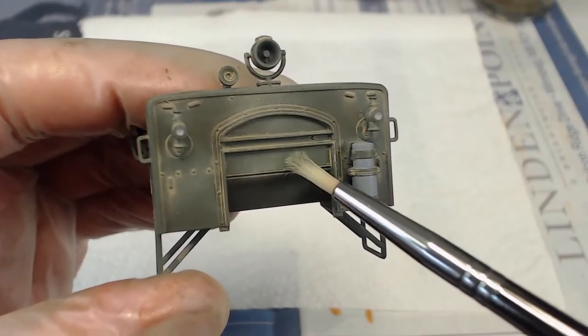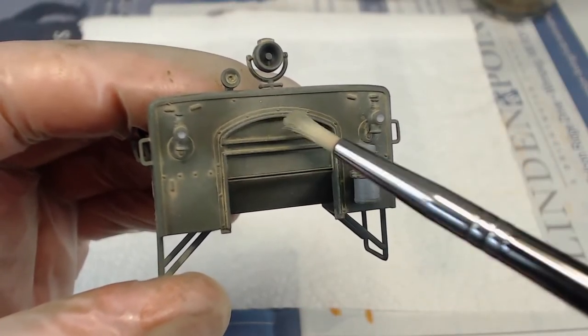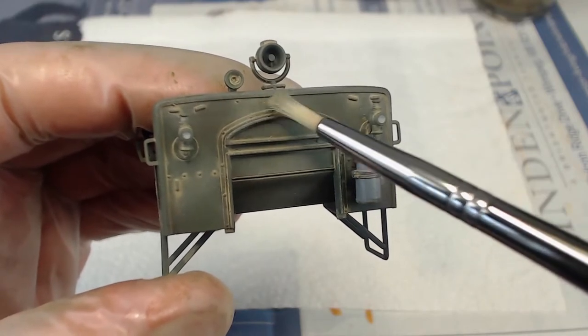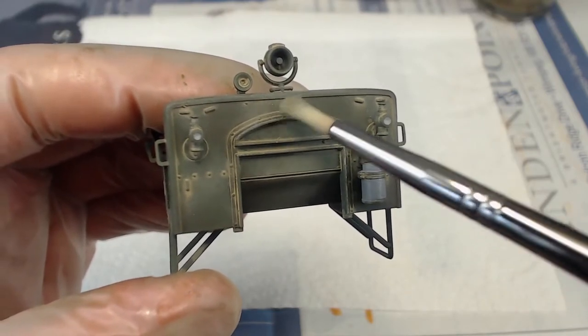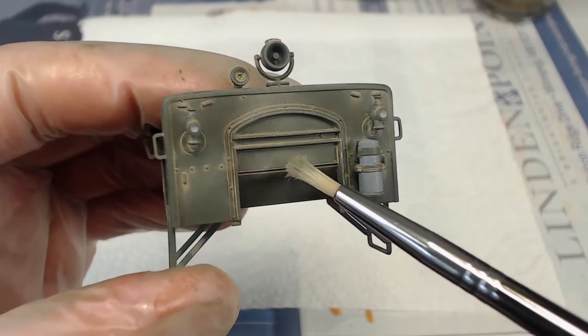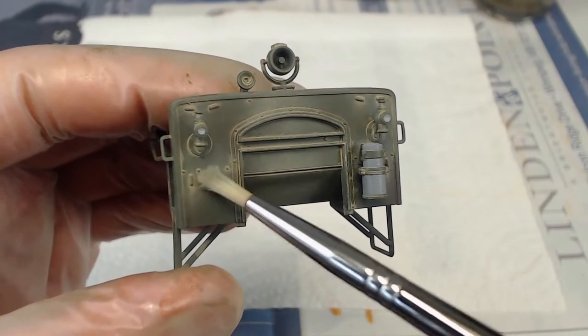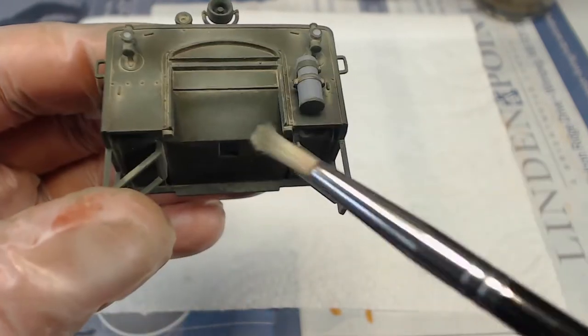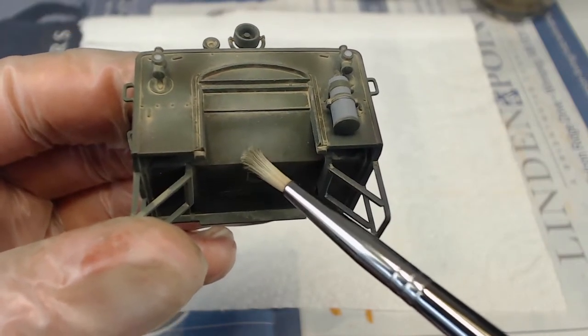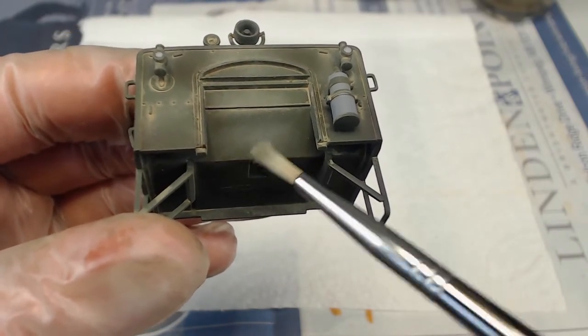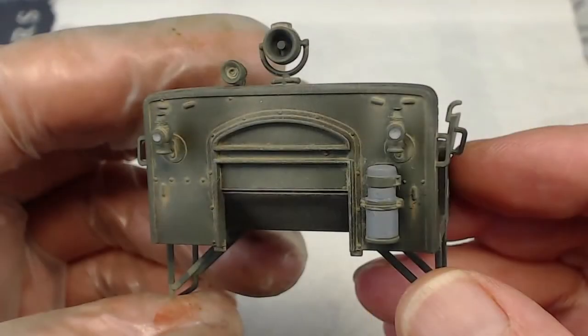Next we add highlights using our light sienna colored oil mixed with a little white to lighten it. Again we use very little paint undiluted and with a large soft brush we gently dab on the color. We build up the color gradually and blend and feather it into the base coat. This again gives us variety and reproduces that faded panel look. And here's the look so far.